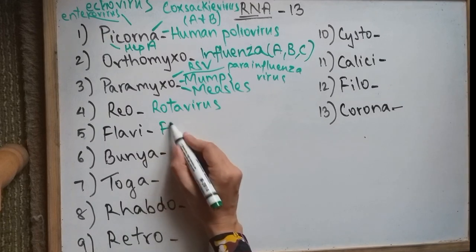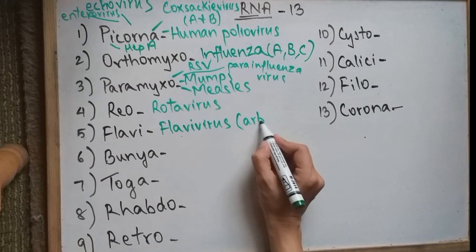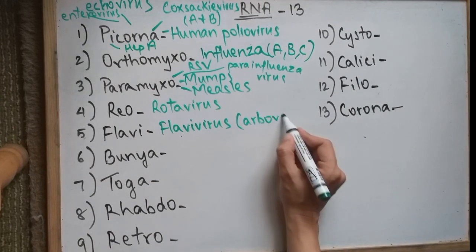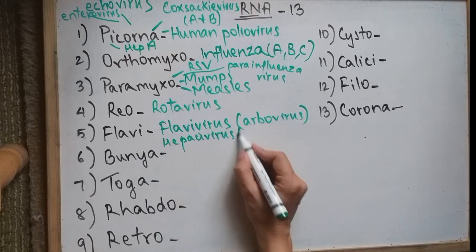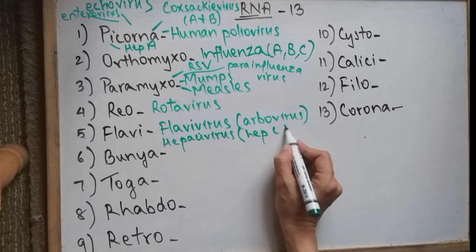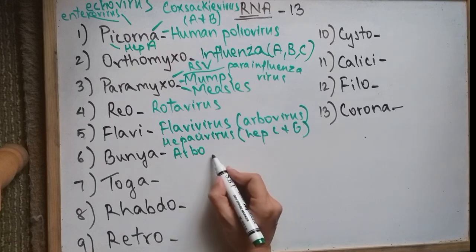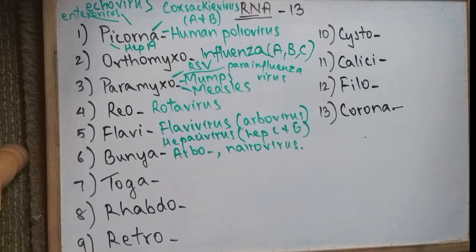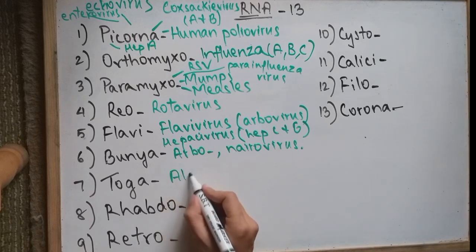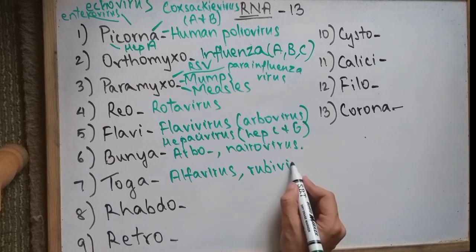Flaviviridae has genus Flavivirus, which includes arboviruses causing yellow fever and dengue. It also has genus Hepasivirus, under which are Hepatitis C and G viruses causing liver diseases. Then Bunyaviridae has arboviruses causing encephalitis, and Niroviruses which cause Crimean Hemorrhagic Fever. Moving on to genus Alphavirus under Togaviridae, which has arboviruses, and the rubivirus causing rubella and congenital diseases.